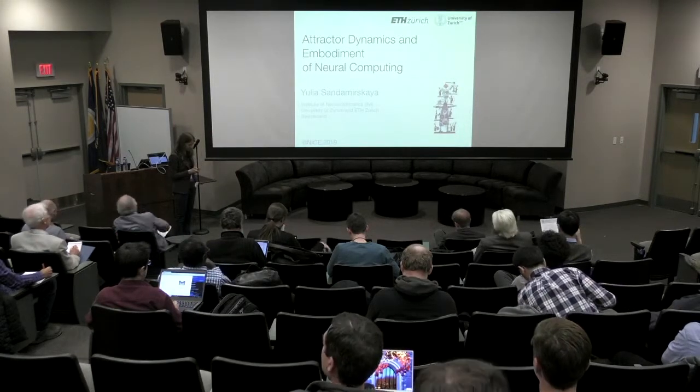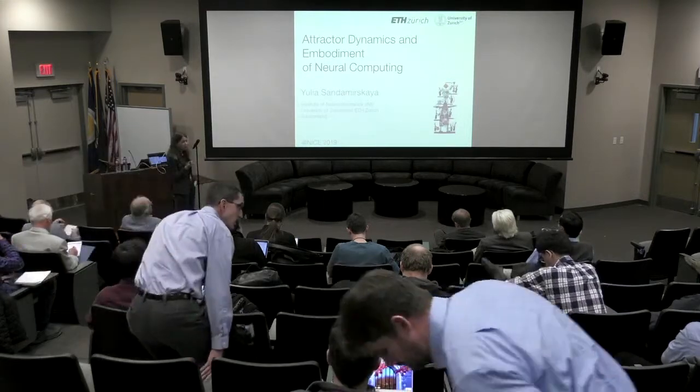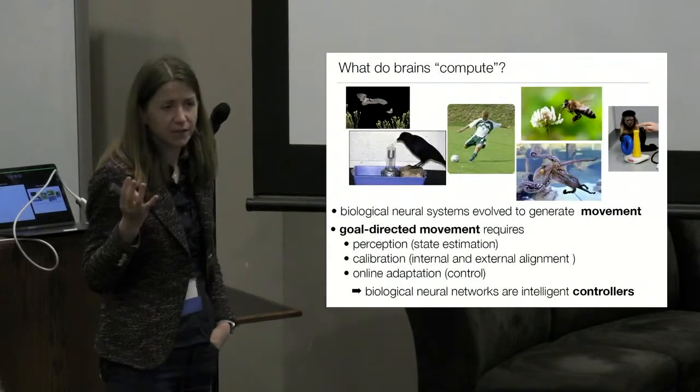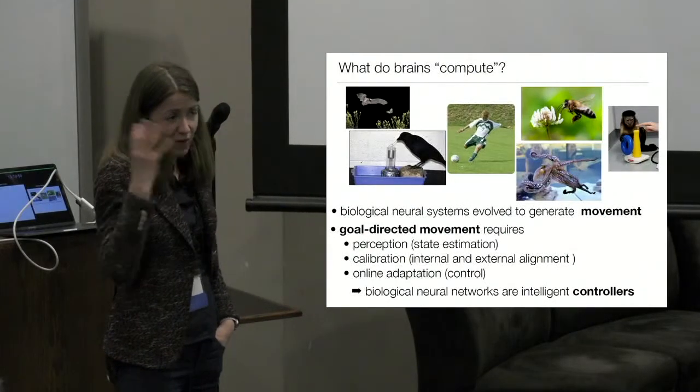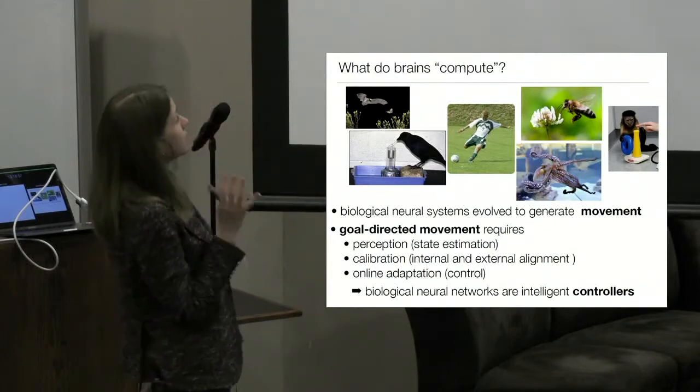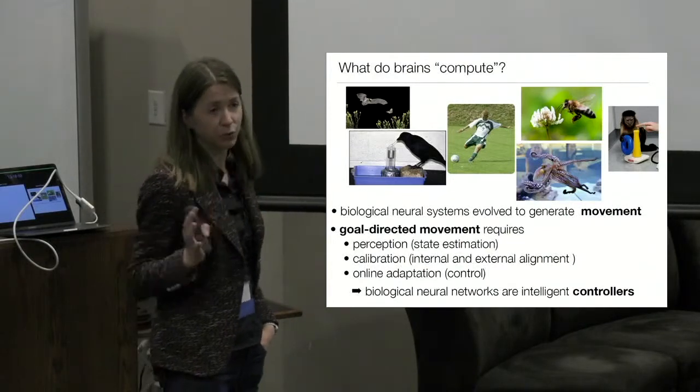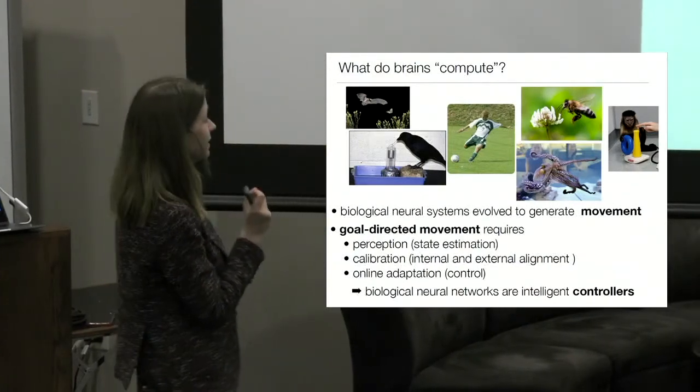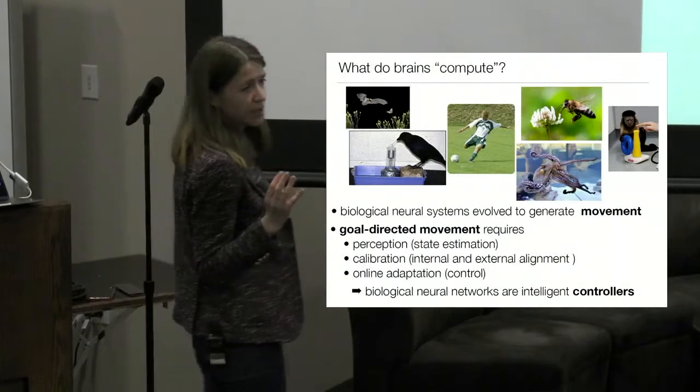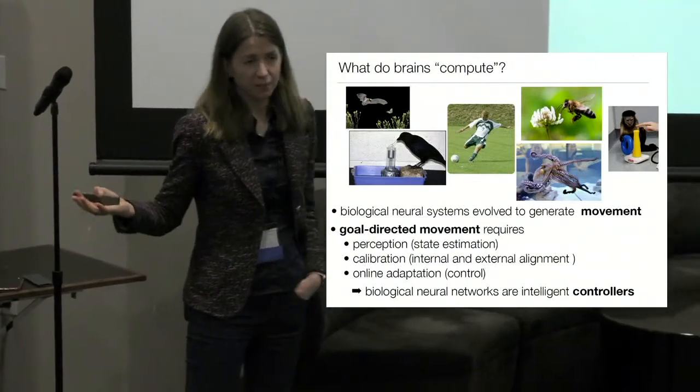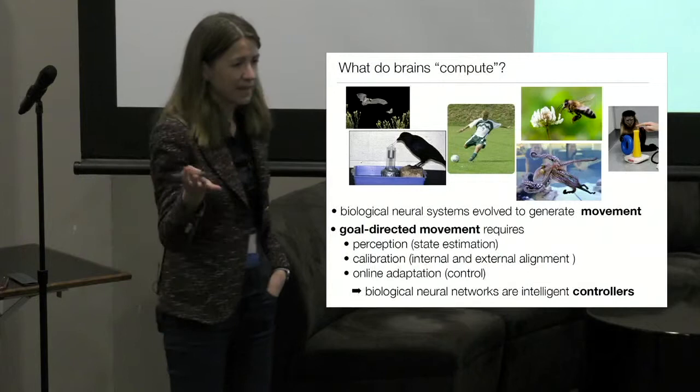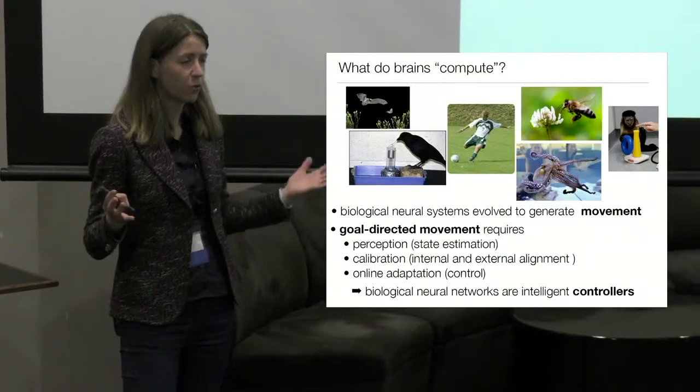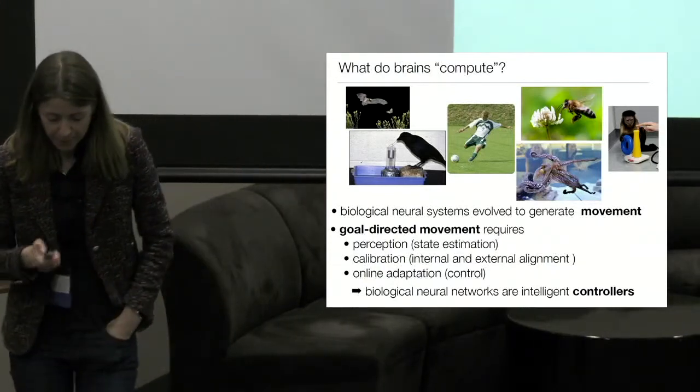However, I will start with a very general and conceptual question. Since we are looking for neurally inspired computing elements, and many of us are thinking of biological neural networks and trying to understand the brain, I think it's useful once in a while to ask ourselves: what do brains actually compute? And you can say many things, but we should face the fact that biological neural systems evolved mainly to generate movement, to move around in the environment. There's an anecdotal story of a mollusk that has a brain until it attaches itself to a stone, doesn't move anymore, and eats its own brain.